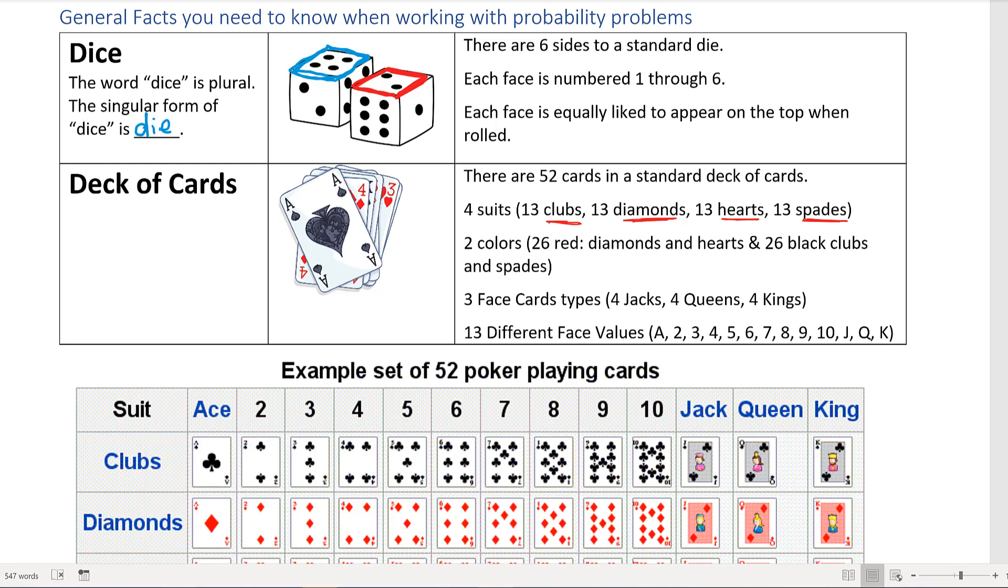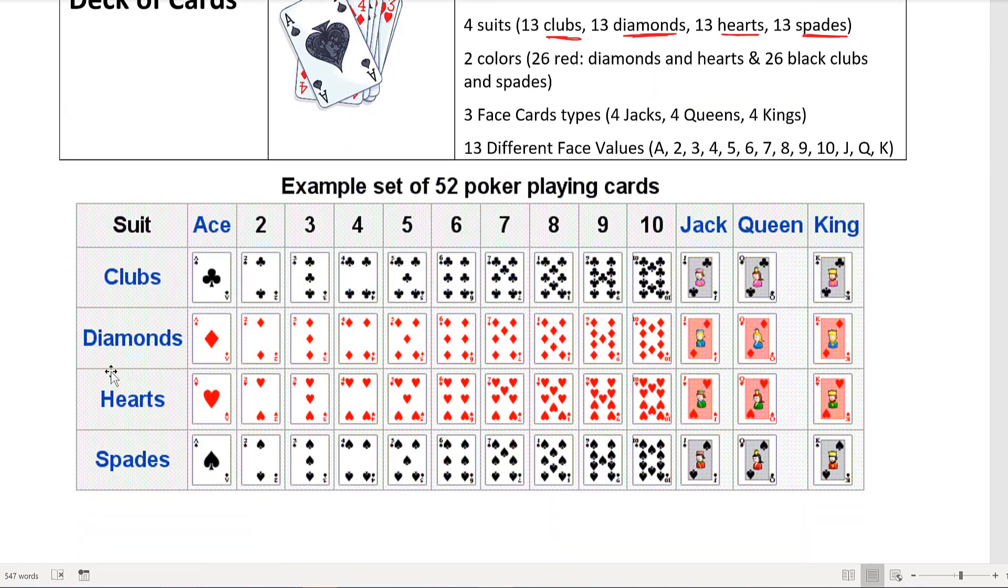And then there are 13 different face values. We have A (your ace - sometimes it's used as a one depending on the game you're talking about), two through ten, jack, queen, and king. Now the aces are sometimes denoted as one, sometimes denoted as A, but they are not a face card because there's not a face on the card. So even though it has a letter, it's not a face card.